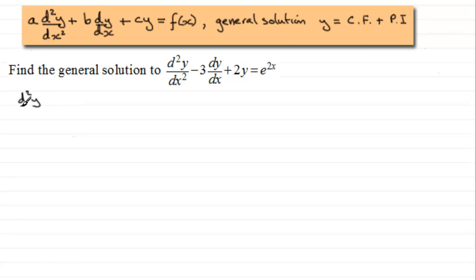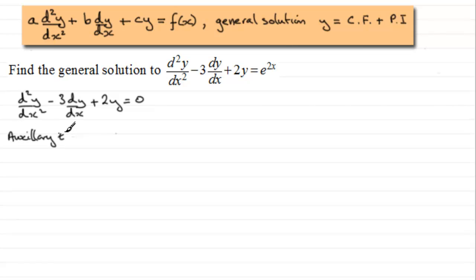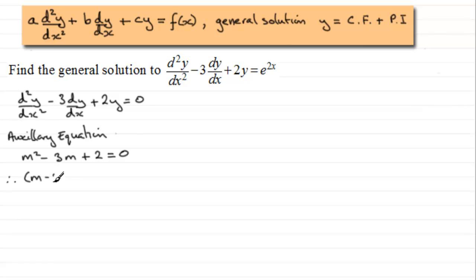Let's write it down: d²y/dx² minus 3 dy/dx plus 2y equals zero. Now we need to work out our auxiliary equation. If we write d²y/dx² as m², we get m² minus 3m plus 2 equals zero. This equation factorizes to (m minus 2)(m minus 1) equals zero.